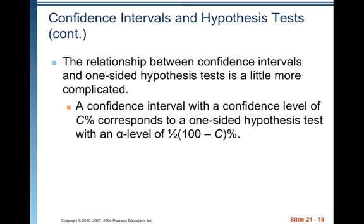The relationship between confidence intervals and a one-sided hypothesis test is a little more complicated — you divide by two. A confidence interval with a confidence level of C% corresponds to a one-sided hypothesis test with an alpha level of one-half times (1 − C%). So for 95% confidence, if you want to consider just the greater than or less than alternative, it would correspond to half of 5%, a 2.5% alpha level.